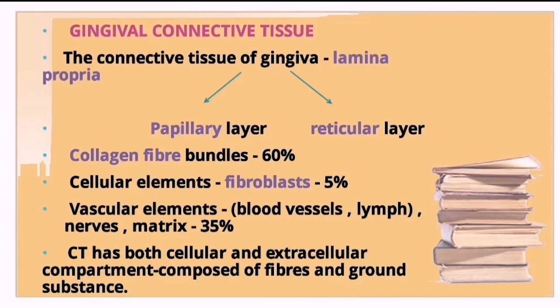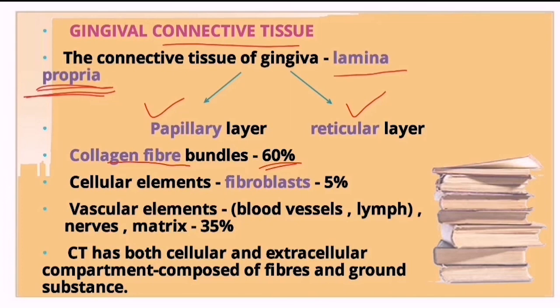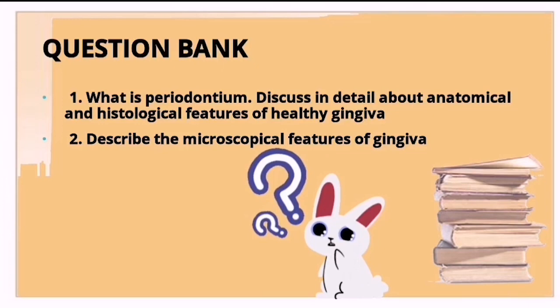The connective tissue of gingiva is called the lamina propria, divided into a papillary layer and a reticular layer. It contains around 60% collagen fiber bundles, 5% cellular elements such as fibroblasts, and around 35% vascular elements including blood vessels, lymphatics, and nerves. It has both cellular and extracellular compartments, with the extracellular compartment composed of fibers and ground substance.